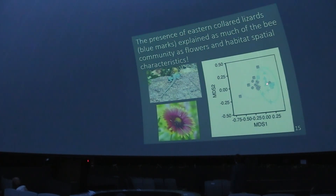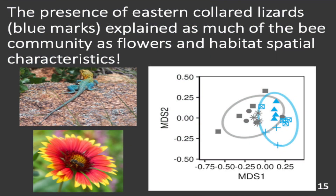The gray dots represent places without the lizard and the blue dots are places with the lizard — each dot represents a bee community. All of the bee communities in areas without the lizard are similar to each other, and all the bee communities in areas with the lizard are similar to each other. So something about our manipulation is changing and shifting bee communities to look differently. This was a great first piece of information that these predator interactions are having an effect on bees.